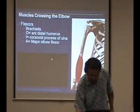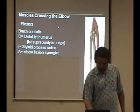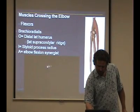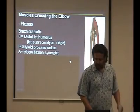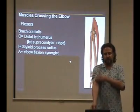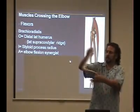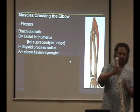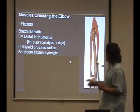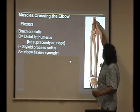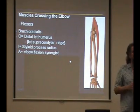Next is the brachioradialis. It's going to come from the distal lateral humerus — a little bit farther up, not necessarily the supracondylar ridge, it comes fairly high up. Then it's going to go across to the distal styloid of the radius.